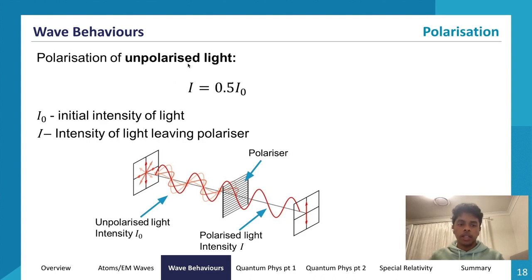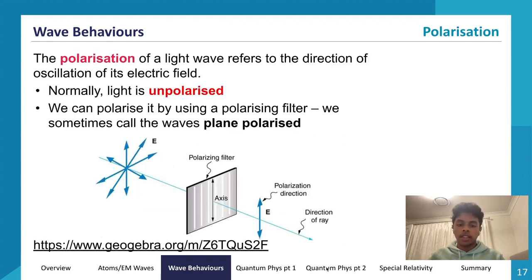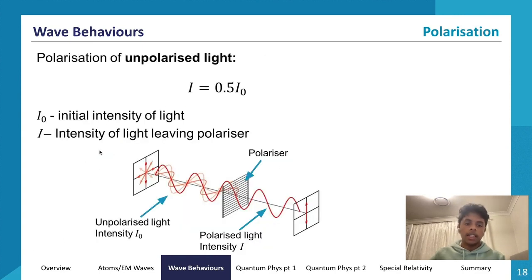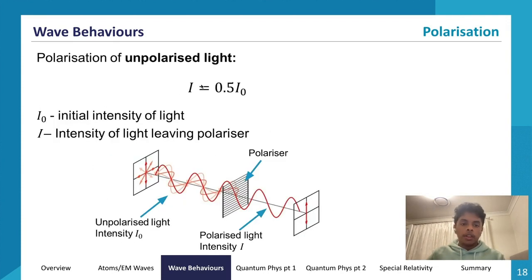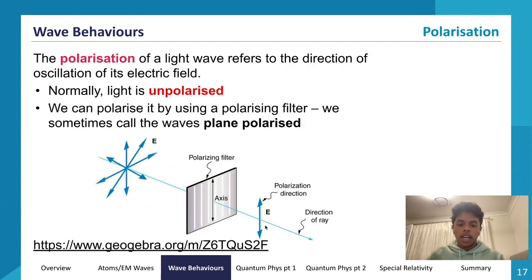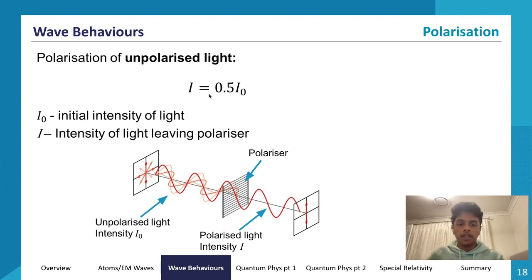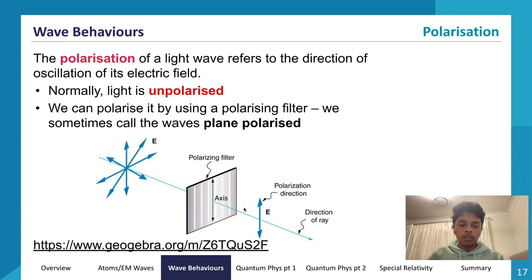To calculate the intensity of polarized light after unpolarized light passes through a filter, we use I = 0.5 I₀, where I₀ is the intensity of the incoming unpolarized light and I is the intensity of the plane polarized light leaving the filter. The polarized light has half the intensity of its unpolarized counterpart.